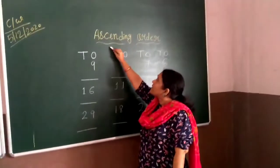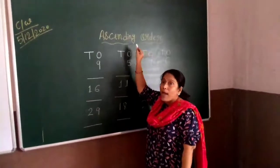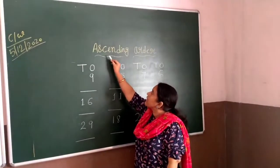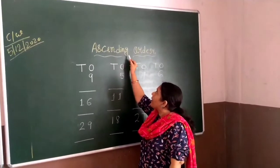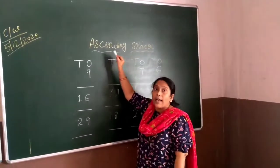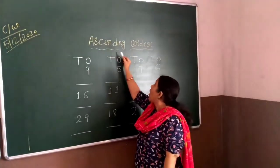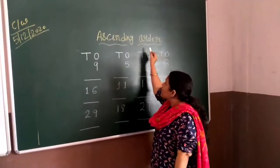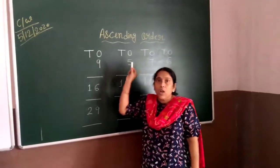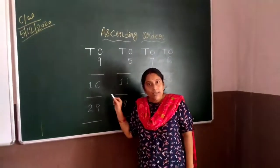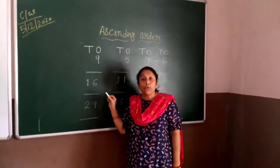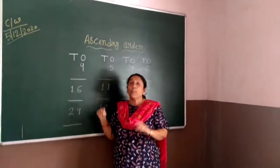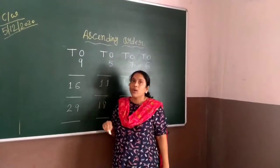So what is the spelling of ascending order? A-S-C-E-N-D-I-N-G, ascending order, O-R-D-E-R. Ascending order means you always have to arrange numbers from the smaller number to the bigger number.